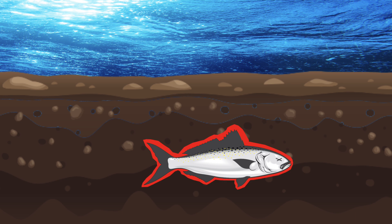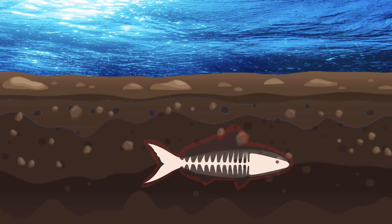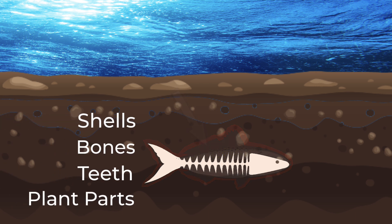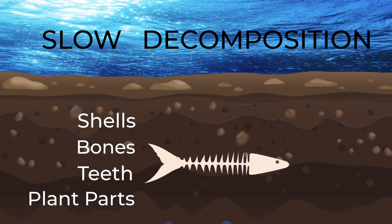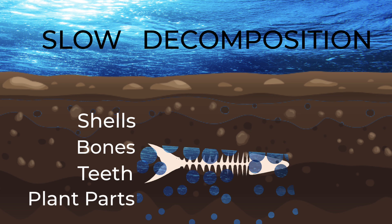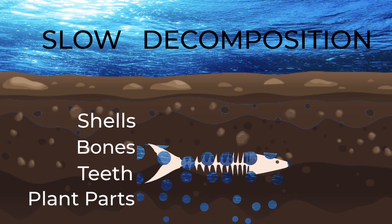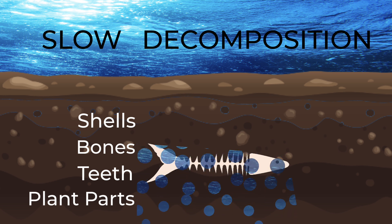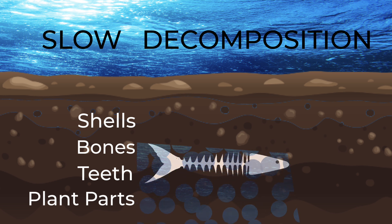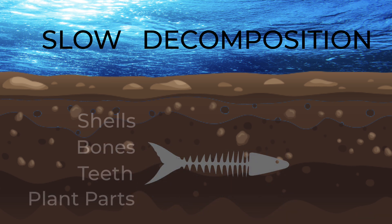The soft fleshy bits typically still decompose reasonably rapidly, but the hard parts — things like shells, bones, teeth, maybe plant parts — take considerably longer. They undergo a process of slow decomposition. Over time, groundwater rich in minerals slowly seeps into the decomposing bone, shell, or plant parts. These minerals get deposited into the pores and cavities that have started to form, and as they crystallize, they replace the organic material, turning the remains into an identical stone copy of whatever was buried.